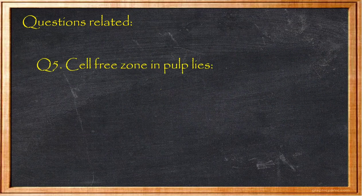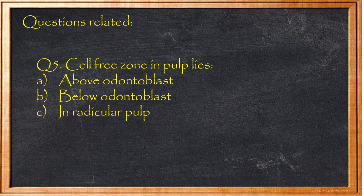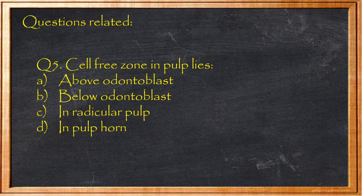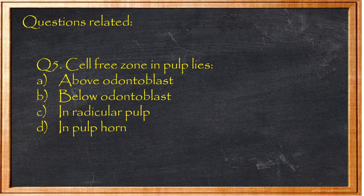Question 5: Cell-free zone in pulp lies — A) above odontoblast, B) below odontoblast, C) in radicular pulp, D) in pulp horn. The peripheral pulp has three zones: odontoblast zone (outermost), then cell-free zone, then cell-rich zone, then central pulp. So the cell-free zone (Zone of Weil) lies below the odontoblast zone. Answer: Option B.